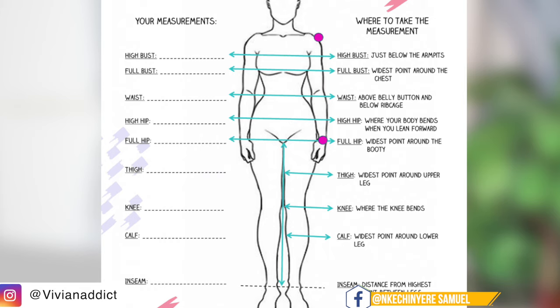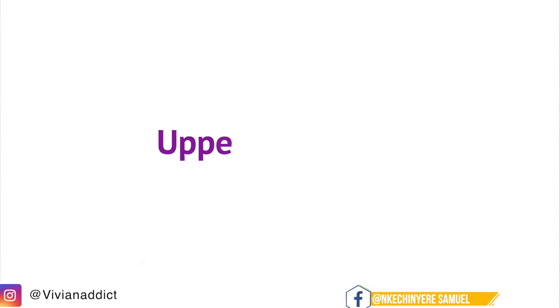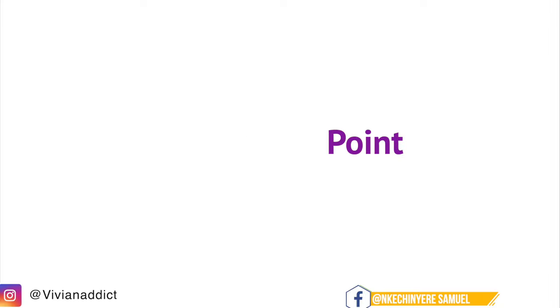When taking body measurements, it is important you take your points first before you start taking the round measurements of those points. What I mean is, if you want to take measurements of a client, yourself, or anyone, you have to take the points first. The points are the places where each of those measurements are located.